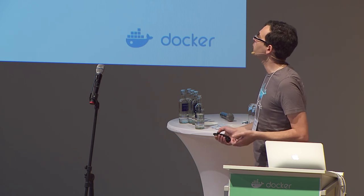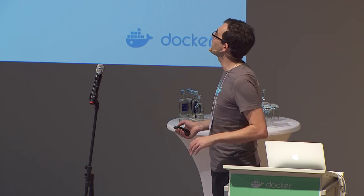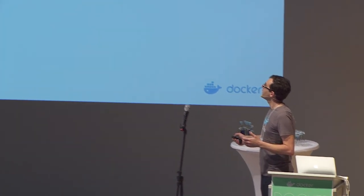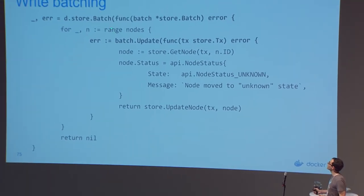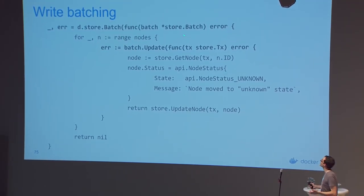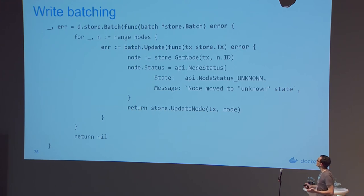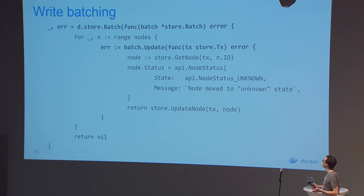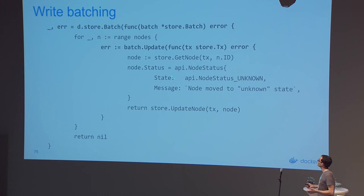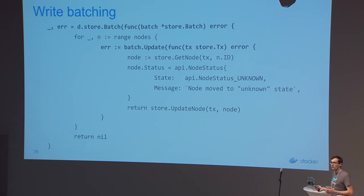When you use the batch method, the store decides how many transactions to split your group of updates into. You call batch with a callback that gets a batch object, loop over a bunch of objects, and for each call an update method on the batch. Inside the callback you can do any changes atomically — generally one or two small things — and those are guaranteed to land in the same transaction. This group of updates could be merged into a larger transaction or split into separate ones depending on the optimal size.